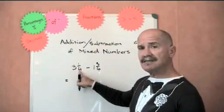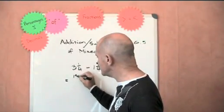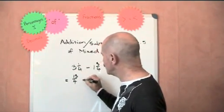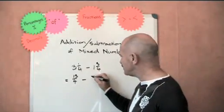So we change that into an improper fraction by multiplying 4 times 3 to 12, plus 1 is 13 over 4, minus 4 times 1 is 4, and 3 is 7 over 4.